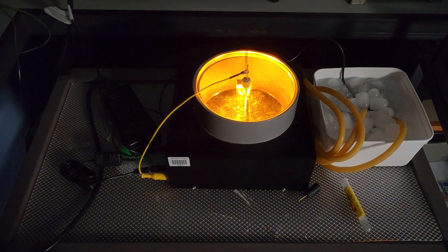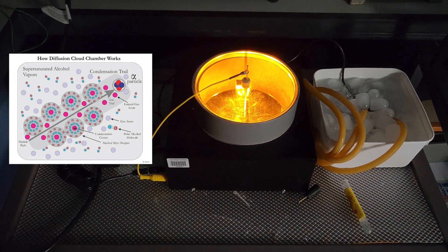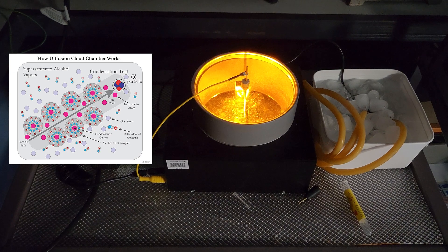This is a cloud chamber. It consists of a supersaturated alcohol vapor through which particles of radiation create trails of ionized gas particles, which causes the vapor to condense into visible tracks.